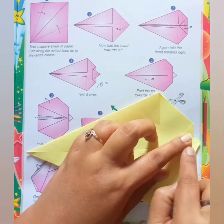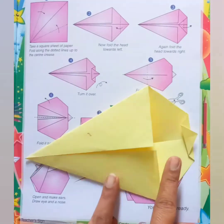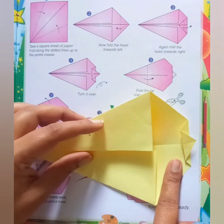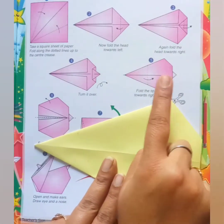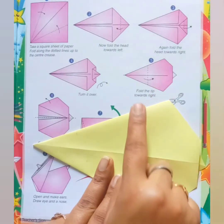Now fourth step, just turn it over. Turn this portion outside like this.